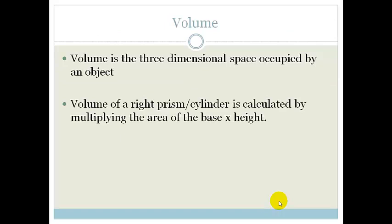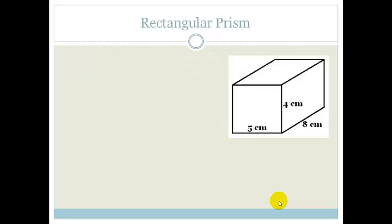Well, it's actually easier than working out the total surface area. First of all, volume is the three-dimensional space occupied by the object. In other words, it's how much space the object takes up. And the volume of a right prism or cylinder is calculated by multiplying the area of the base times the perpendicular height. That's it. So let's look at some examples.